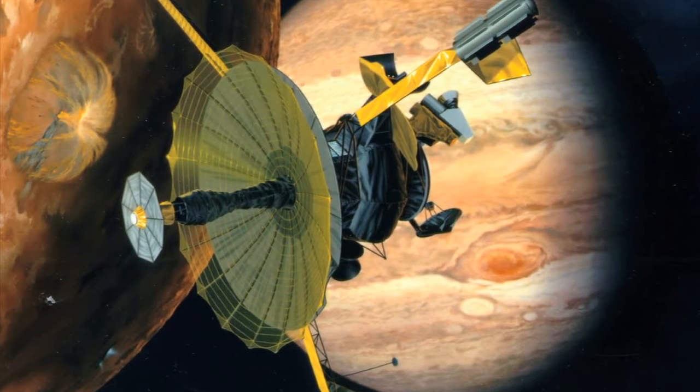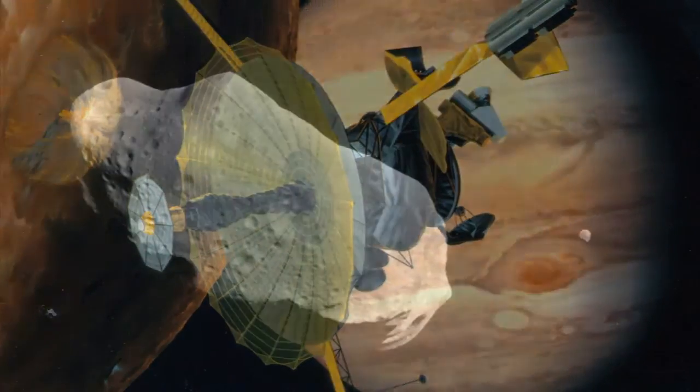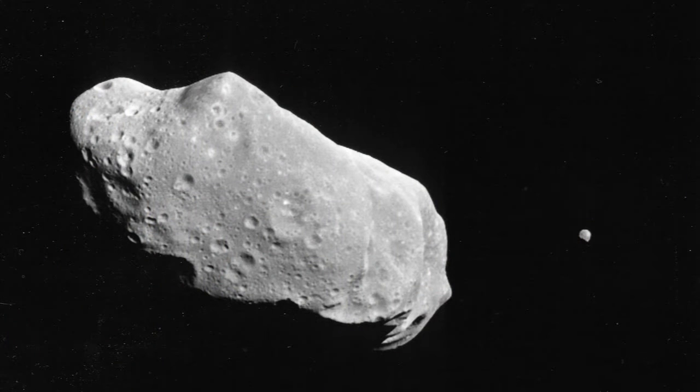The spacecraft Galileo first discovered in 1993 that an asteroid called 243 Ida had its own moon.